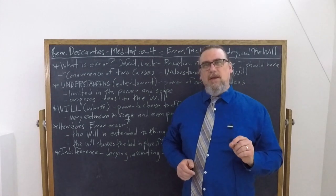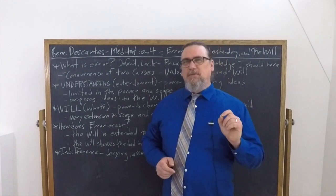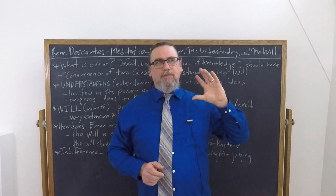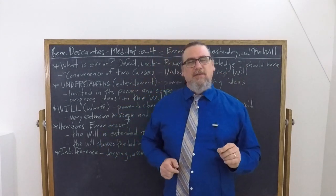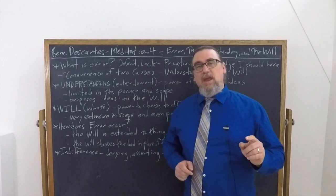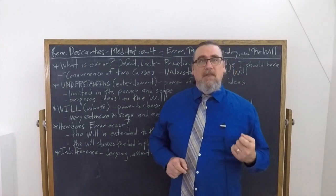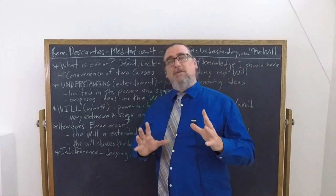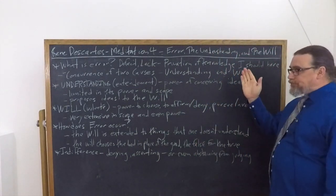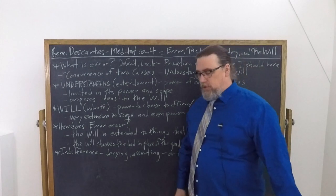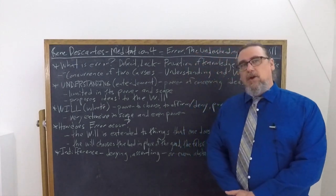That false information isn't just false because it doesn't map onto reality. We misunderstand things. It's because on some level we affirm that to be the case. So this is a very important clarification to make. We have to have this concurrence of two causes, as he says, in order to make mistakes.